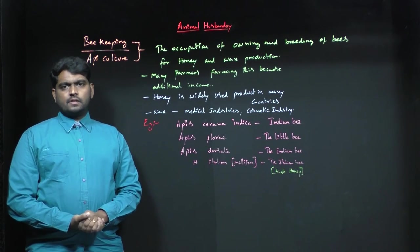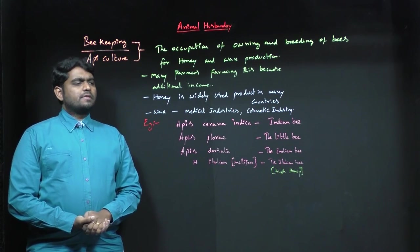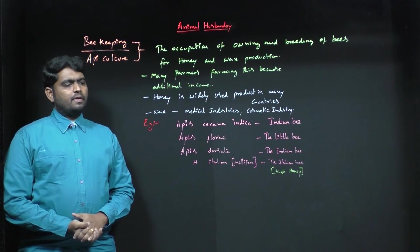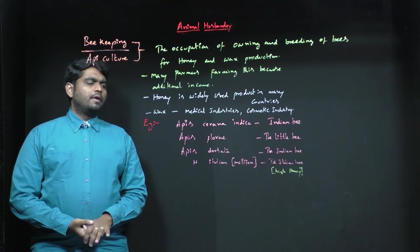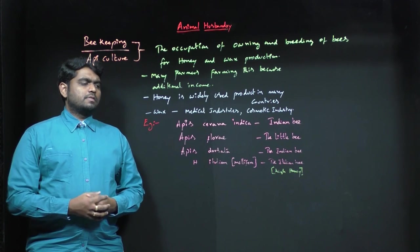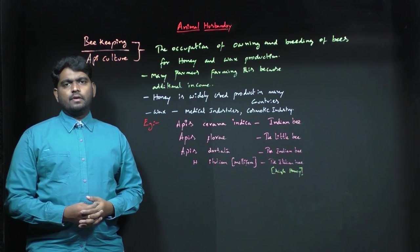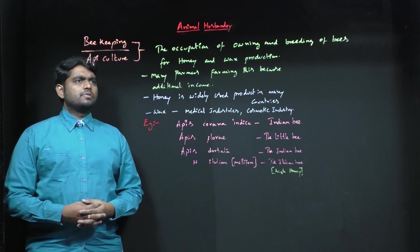These are the bee examples. Apis cerana indica, it is an Indian bee. Apis florea, it is a little bee. Apis dorsata, the Indian bee. And also Apis mellifera, that will produce high honey yield. This is about apiculture.